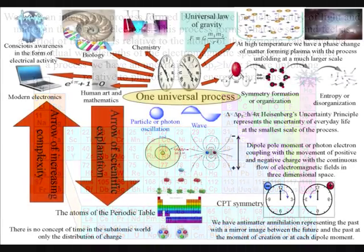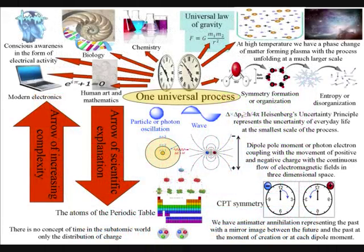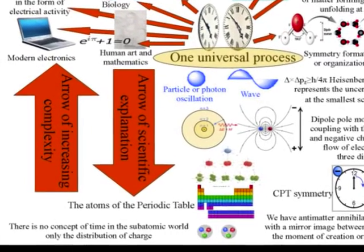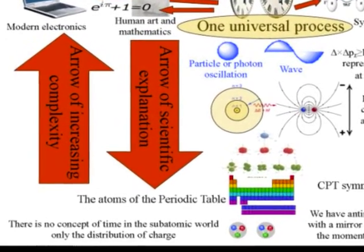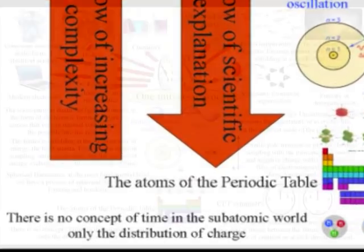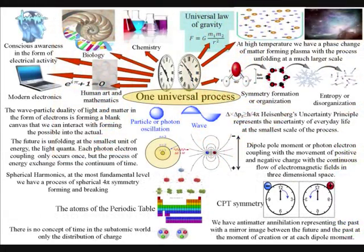This can be explained using this diagram with an arrow of scientific explanation pointing down towards the atoms of the periodic table and an arrow of increasing complexity pointing up towards the great complexity and diversity of life.